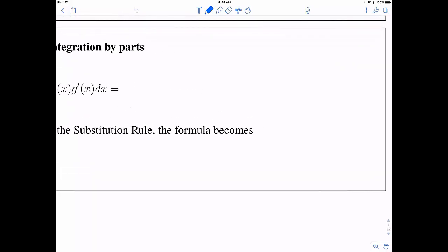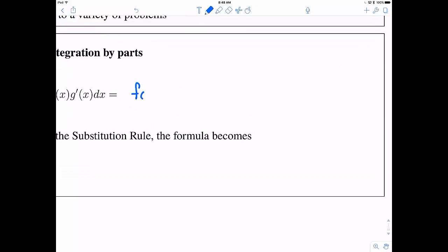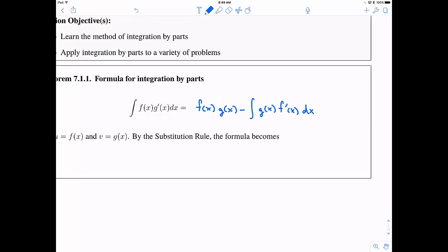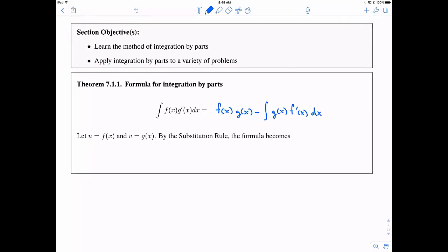Integration by parts is the closest thing we have to a product rule for antiderivatives. You can see we have this f times g prime of x dx. The claim is that this is equal to f of x times g of x minus the integral of g of x times f prime of x dx. Now, sometimes we like to write this in a little bit cleaner way. If we say u is f of x and v is g of x, then we can use the substitution rule, and the formula becomes the integral of u dv is equal to uv minus the integral of v du.